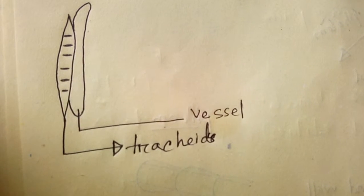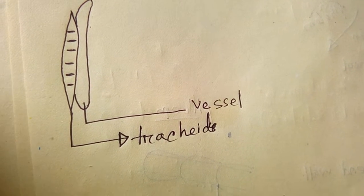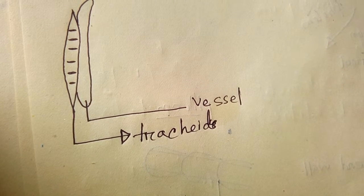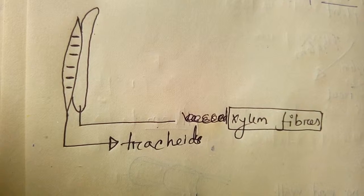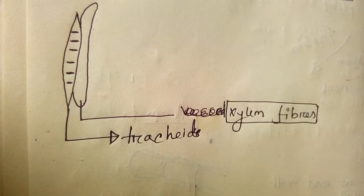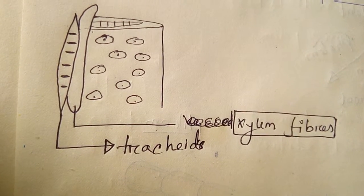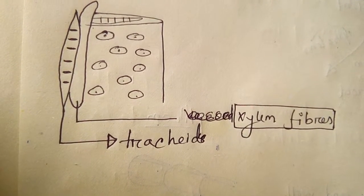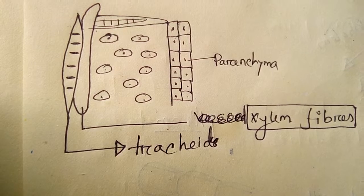For xylem, tracheid is an elongated cell. And beside tracheid cells are present vessel cells. Beside vessel, they are present xylem fiber. Sorry, this is not vessel cell, this is xylem fiber. Beside tracheid cells are present xylem fiber, and beside xylem fiber are present xylem vessel cells. And beside vessel cells are present elongated parenchyma cells. The parenchyma of xylem is called xylem parenchyma.